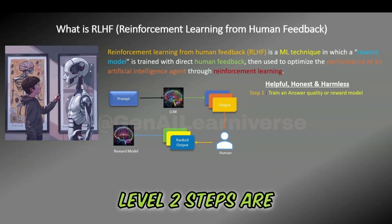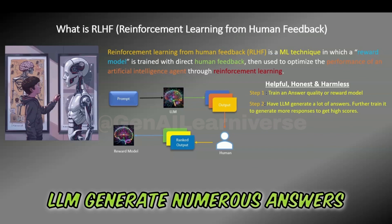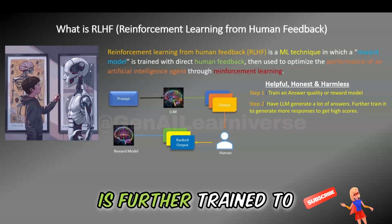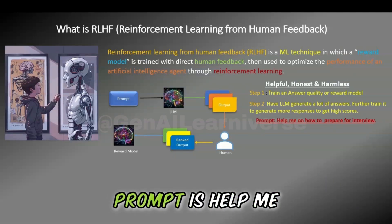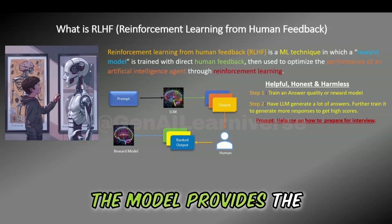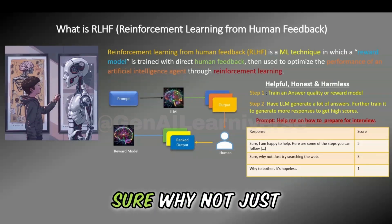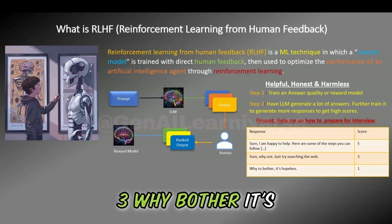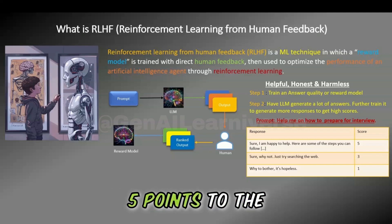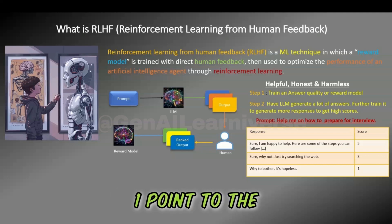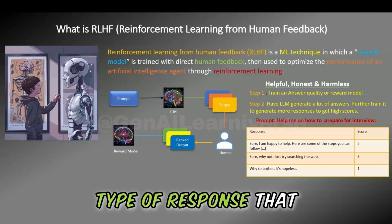At a high level, two steps are involved: first, train an answer quality or reward model; second, have the LLM generate numerous answers. Humans then score these answers, and the model is further trained to produce responses that receive higher scores based on the feedback provided. For example, if the prompt is 'help me on how to prepare for an interview,' and the model provides three responses — 1) 'Sure, I am happy to help. Here are some steps you can follow,' 2) 'Sure, why not? Just try searching the web,' and 3) 'Why bother? It's hopeless' — we assign scores: 5 points to the first, 3 points to the second, and 1 point to the third. The model will then use these scores to adjust and improve future responses, prioritizing the type of response that received the highest score.